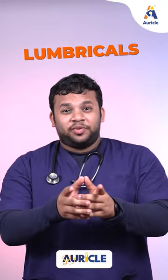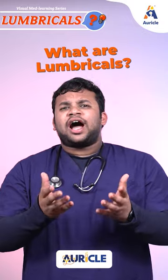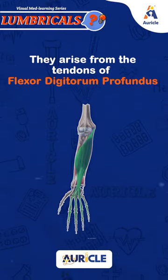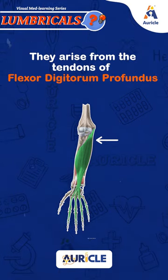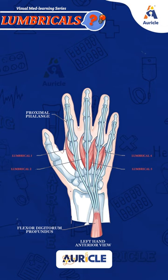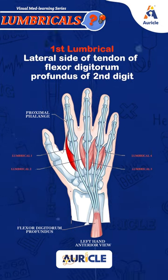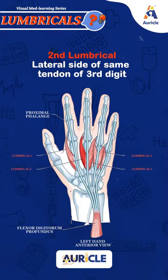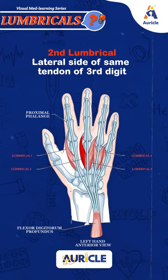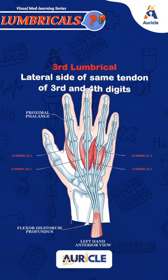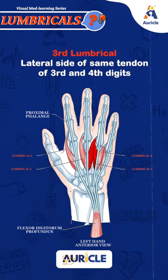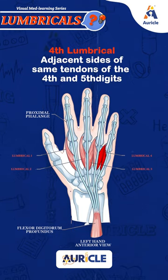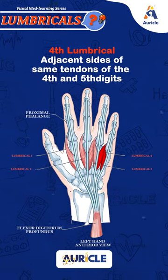Yes, those are lumbricals. Lumbricals are worm-like muscles on each hand and these arise from the tendon of Flexor Digitorum Profundus. The first lumbrical arises from the lateral side of the tendon of Flexor Digitorum Profundus of the second digit. The second lumbrical arises from the lateral side of the same tendon of the third digit. The third lumbrical arises from the adjacent sides of the same tendon of the third and fourth digits, whereas the fourth lumbrical arises from the adjacent sides of the same tendon for the fourth and fifth digits.